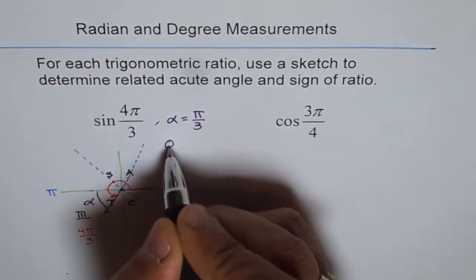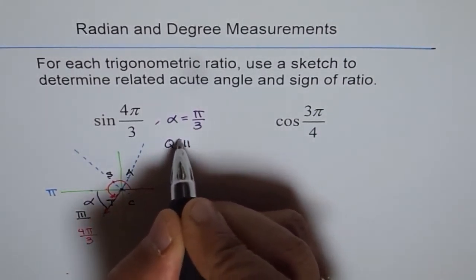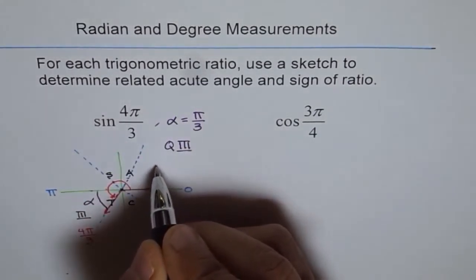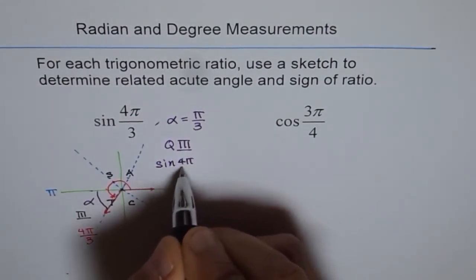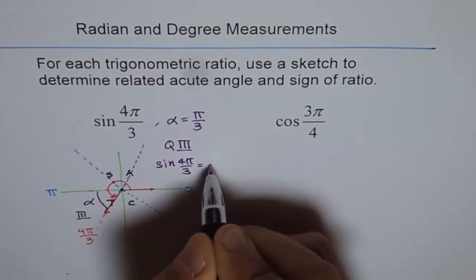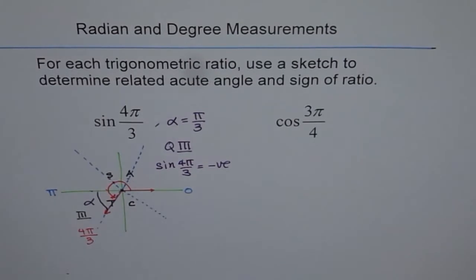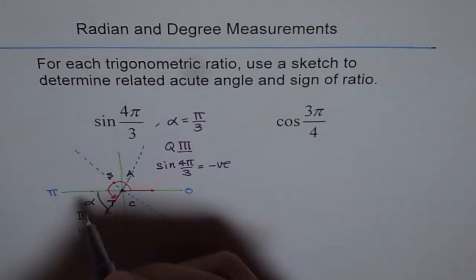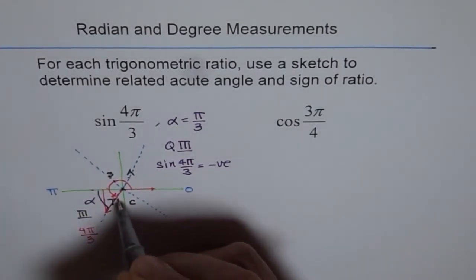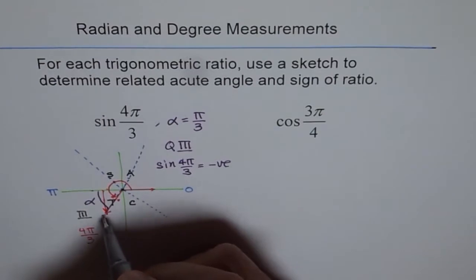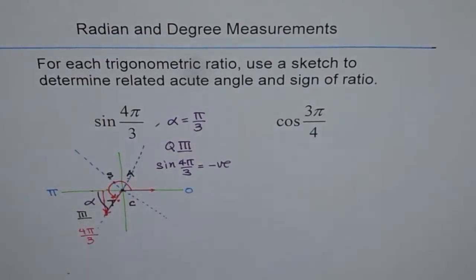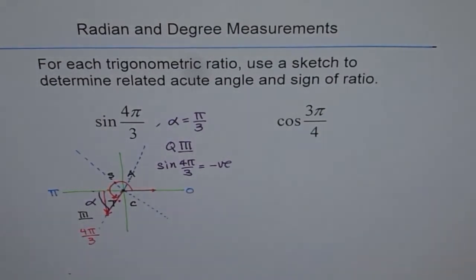And the quadrant for us is 3. And sin 4π by 3 is negative because it is negative in quadrant 3. Even otherwise, if you draw your triangle here, sin is opposite over hypotenuse. Hypotenuse is always positive. This side is going down. Y is negative. And therefore, sin is negative. So that is for sin 4π by 3.